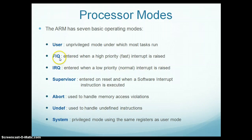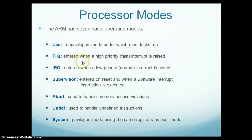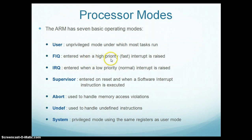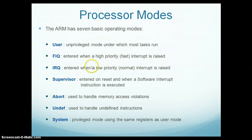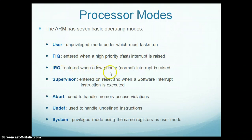Fast Interrupt Request is the mode the processor enters when a high-priority interrupt is raised. And Interrupt Request is the mode the processor enters when a low-priority interrupt is raised.